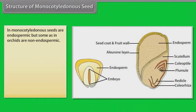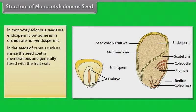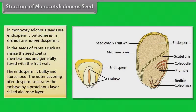Monocotyledonous seeds are generally endospermic, but some, as in orchids, are non-endospermic. In the seeds of cereals such as maize, the seed coat is membranous and generally fused with the fruit wall. The endosperm is bulky and stores food. The outer covering of endosperm separates the embryo by a proteinous layer called the aleurone layer.